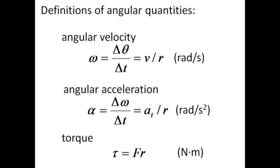We begin the discussion of Lab 7 by defining a few of the angular quantities. Angular velocity, omega, is the rate at which an object rotates and is given in units of radians per second. Dividing the tangential velocity by the radius to the axis of rotation gives the angular velocity.